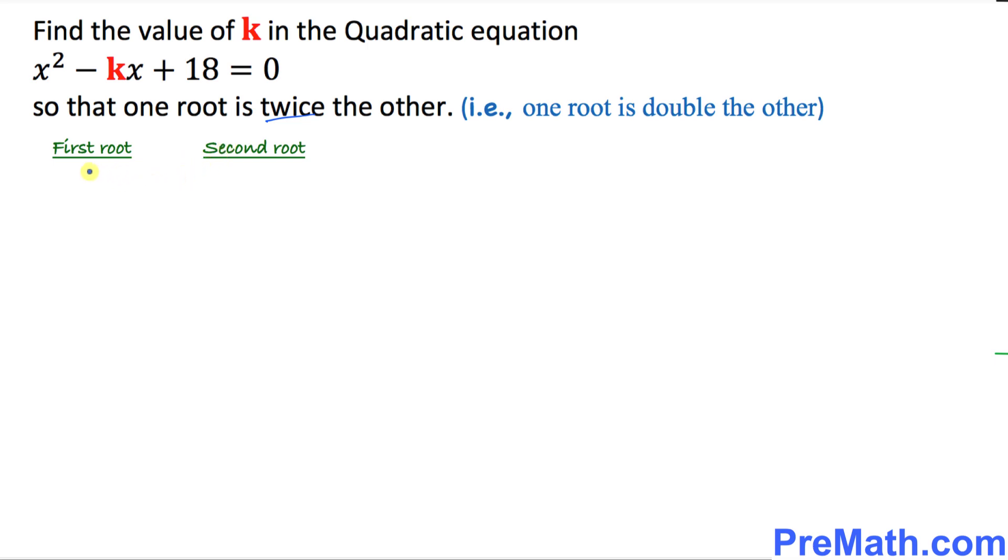If I call the first root alpha then the second root, the other root, is going to be two times this one. So I'm going to call it two times alpha.